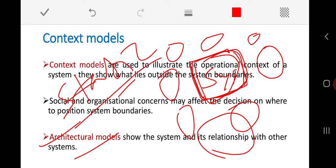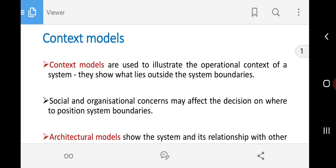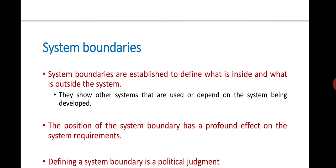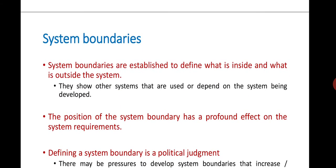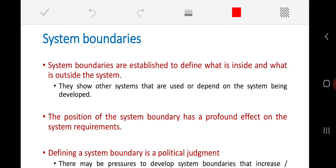A context model is a type of static model. When talking about system models, there are two types: static or dynamic. The context model shows the static nature — it shows only the system along with the boundary and the surrounding systems.